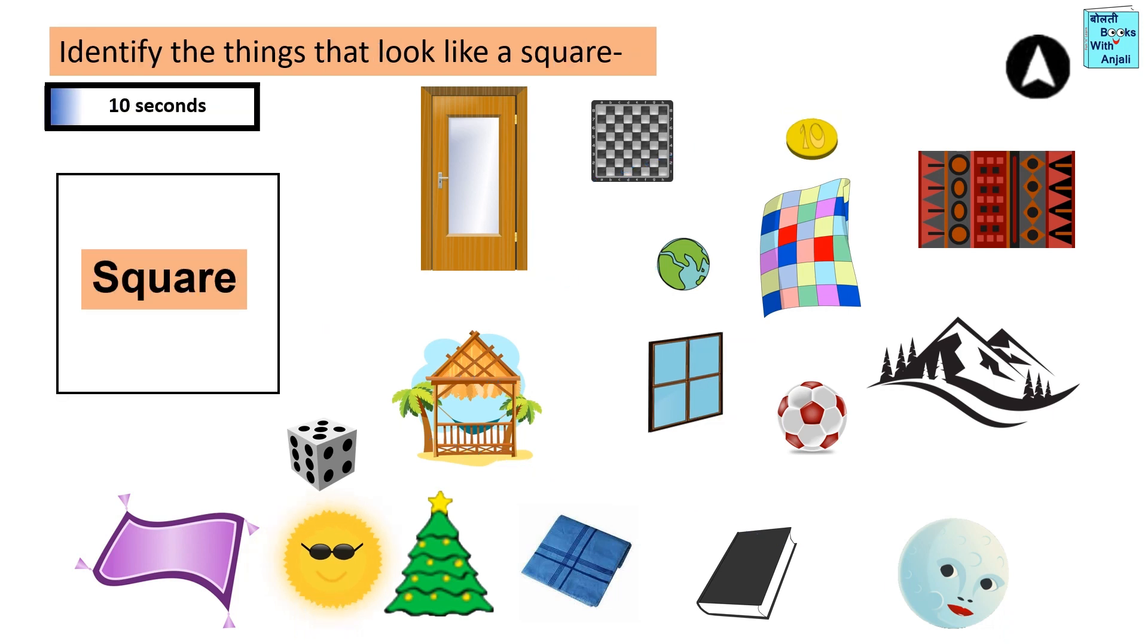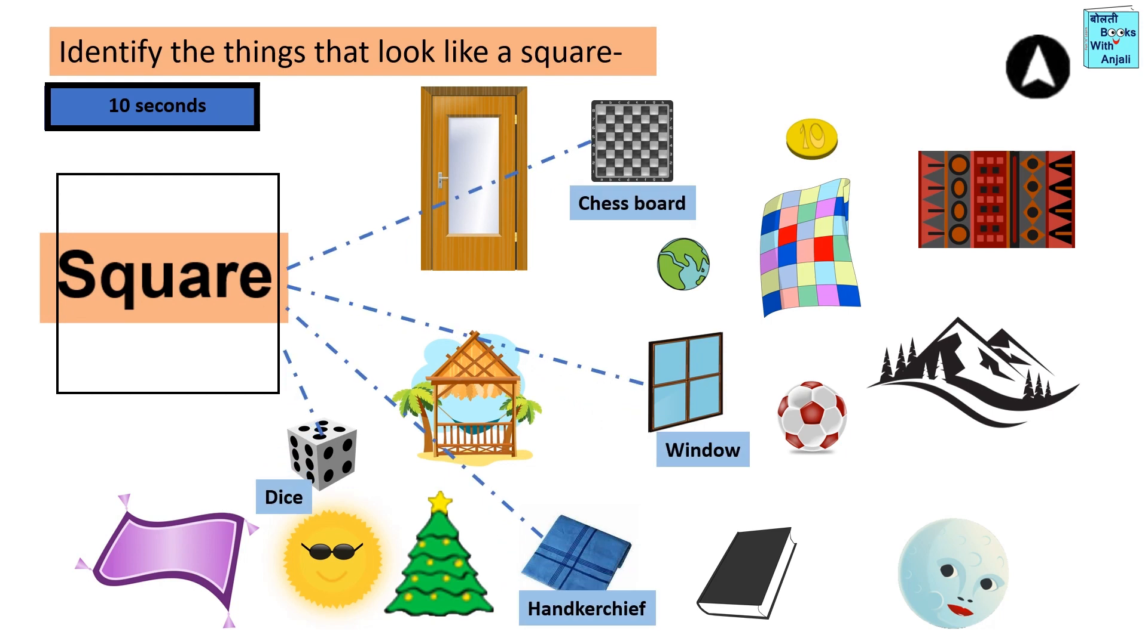Identify the things that look like a square. Square shaped things are chessboard, window, dice, and handkerchief.